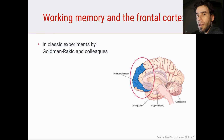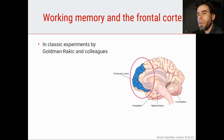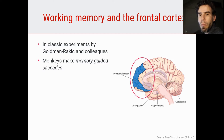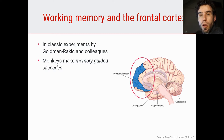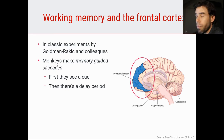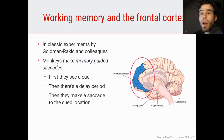Let's start with the link between working memory and the frontal cortex. There are classic experiments, and one very nice one was done by Goldman-Rakic and colleagues, in which they trained monkeys to make memory-guided saccades. The monkey looks at a fixation dot, you flash a stimulus, and then after a few seconds the monkey makes an eye movement to the location that was cued — not immediately, but after a little delay. So there's an element of very simple working memory, with a set size of one: just remember the location you're going to make an eye movement to.